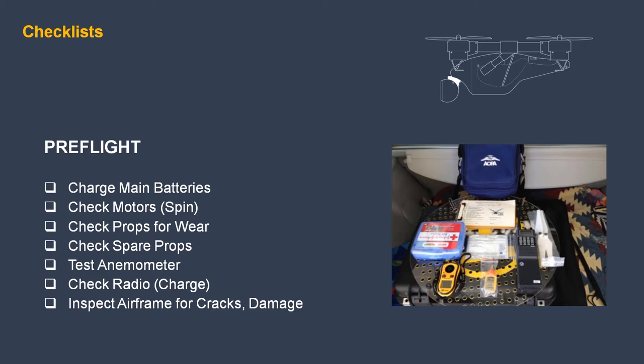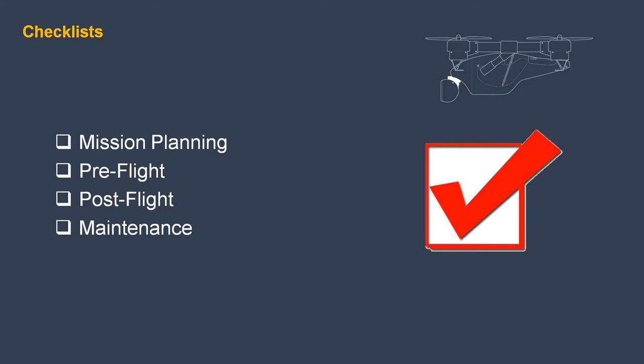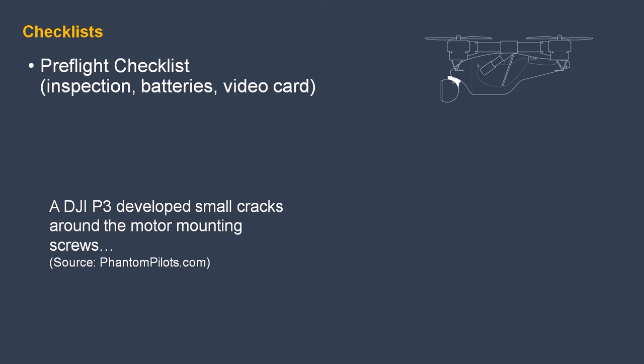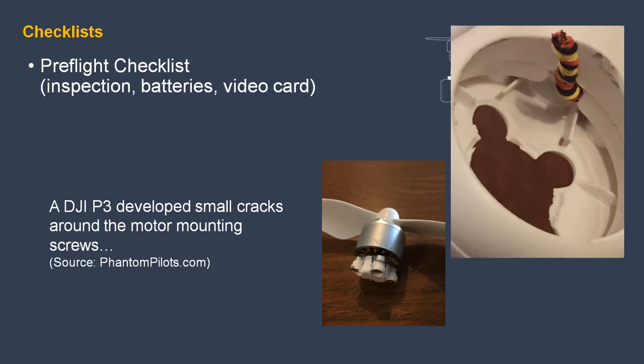Pre-flight: charge the main batteries and check for charge, wear, or damage since the last use. Check motors — spin them around. Check the props for wear and check spare props. Check for wind with an anemometer. Check your radio — is it charged? Inspect the airframe for cracks and damage from previous flights. Develop your own specific checklist for planning the mission, the pre-flight, post-flight, and maintenance. Here's a sample of a DJI Phantom 3 that developed small cracks around the motor mounting screws — after takeoff, the crack got worse and the motor took off on its own. Quadcopters don't fly on three motors, so down it came.